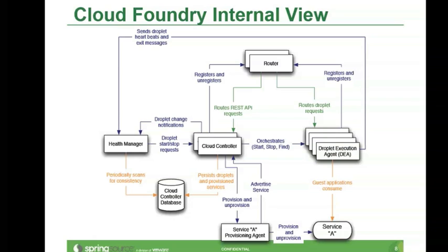Let's first focus on the router. So when you hit the URL, you are really going to the router at the top, and the router is the one that is essentially going to pass on the request to an application instance. But where are those application instances? Those are in what we call the DEA, Droplet Execution Agent.